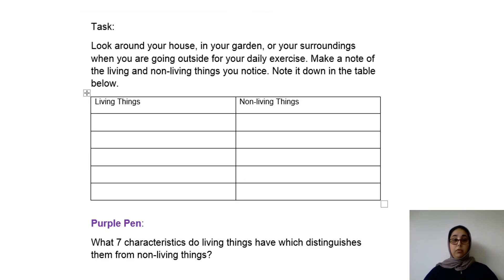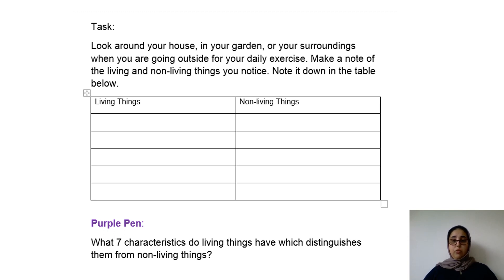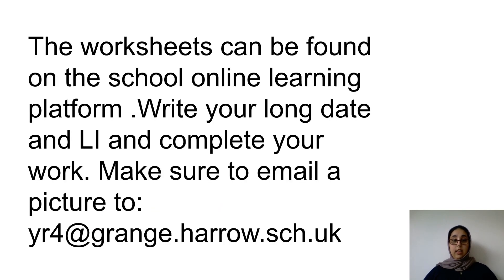Now based on how confident you feel, you could also do this activity: look around your house, in your garden or your surroundings when you go outside for your daily exercise, and make a note of the living and non-living things you see in the table below. And your purple pen activity: what seven characteristics do living things have which distinguishes them from non-living things? If you still don't feel 100% confident, there is a task to use the pictures and organise them between living and non-living things. These worksheets can be found on the school online learning platform. Remember to write your long date, underline it, and complete your work neatly. Once you're done, email me a picture at year4@grange.harrow.fgh.uk.